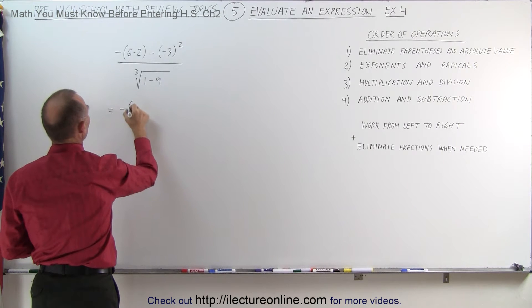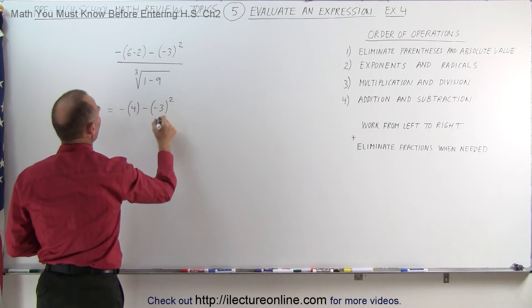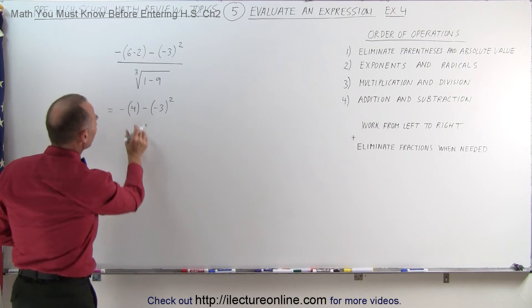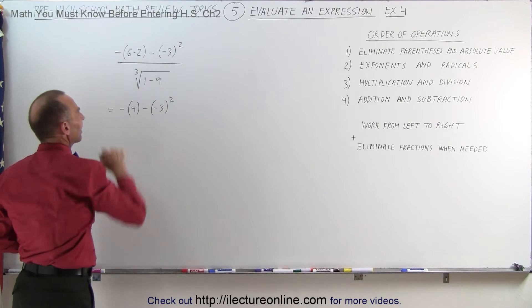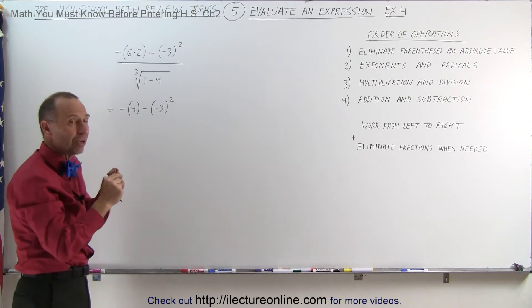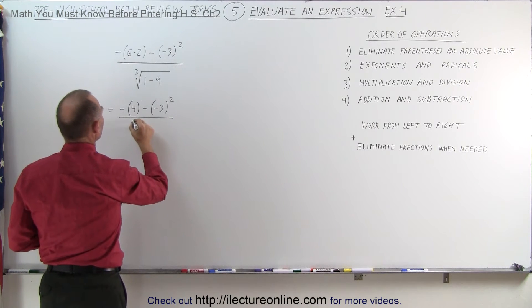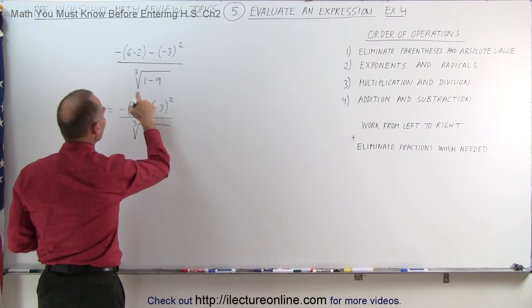So this becomes equal to minus the quantity 6 minus 2, which is 4, minus negative 3 to the second power. Or you may say, well, why did you keep the parentheses there? Because there was a negative sign in front of it. Whenever there's a negative sign in front of parentheses, I want to keep the parentheses there to do the right thing with the negative sign.